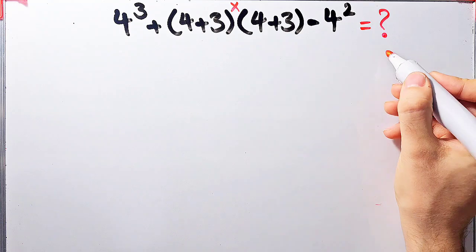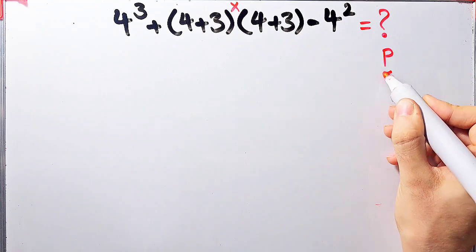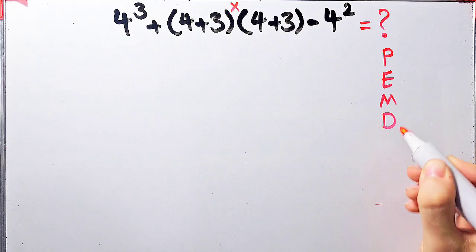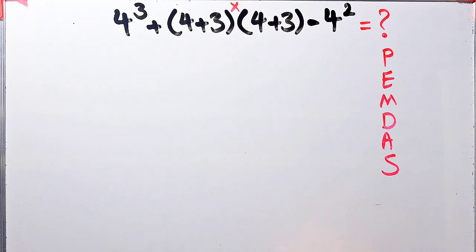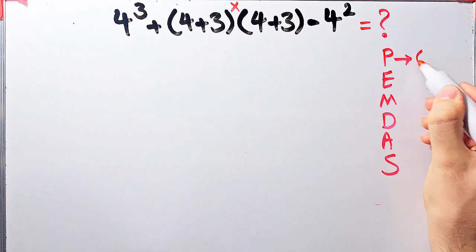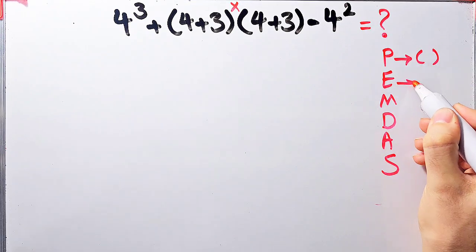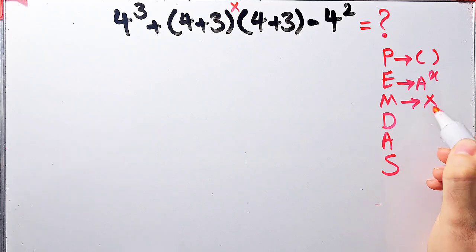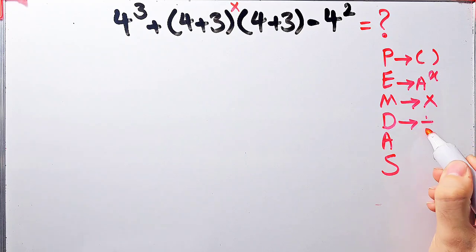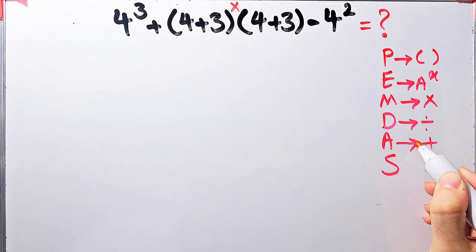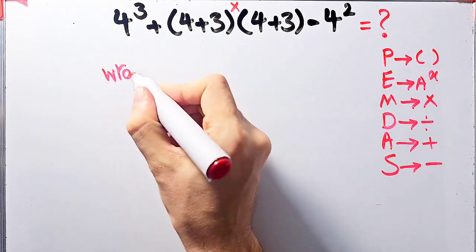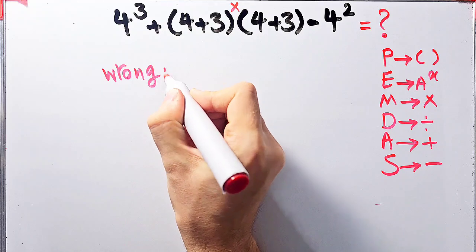To solve this question we need to follow the order of operations, which is PEMDAS. PEMDAS shows the priority of mathematical operations: P for parentheses, E for exponent, M for multiplication, D for division, A for addition, and S for subtraction.